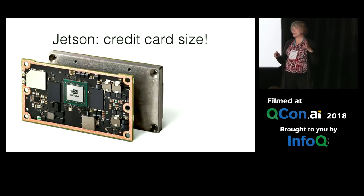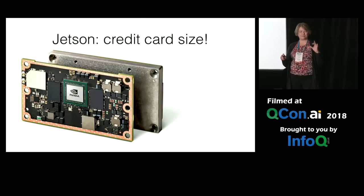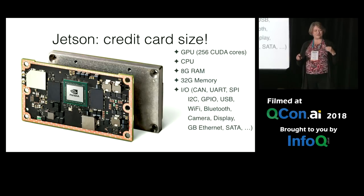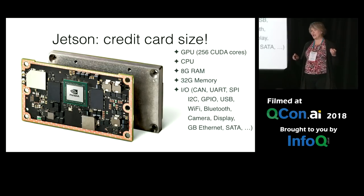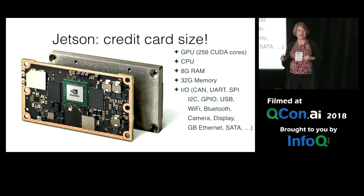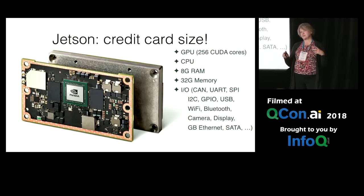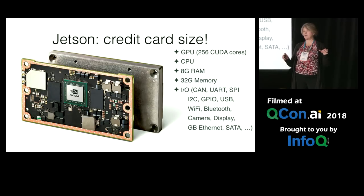The Jetson is a computer on a credit card size platform card, and it's got all kinds of great stuff. It has a GPU with 256 CUDA cores, a CPU with a dual Denver and a quad ARM configuration, 8 gigabytes of RAM, 32 gigabytes of memory, and all kinds of I/O that can be broken out from the board — including I2C, GPIO, USB, Bluetooth, Wi-Fi, camera outputs, video inputs, and you can connect a drive to it.